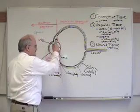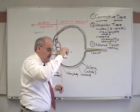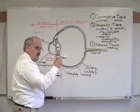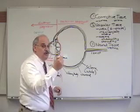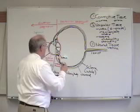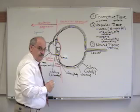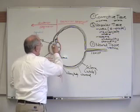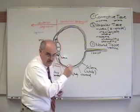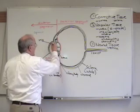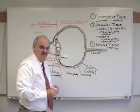Then it percolates up from the posterior chamber, not through the iris but through the pupil, which is the hole in the iris, and into the anterior chamber.